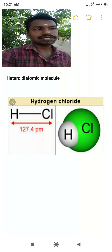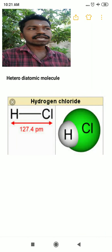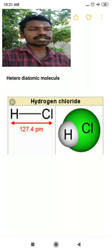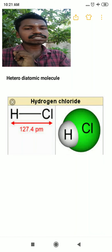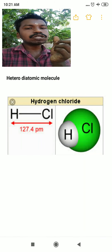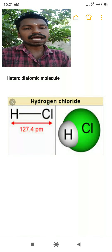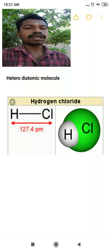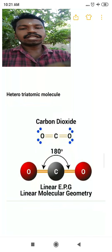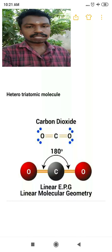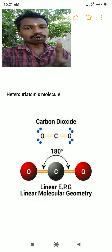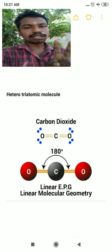Two more types: heterodiatomic and heterotriatomic. HCl is a heterodiatomic molecule — it has two atoms (one hydrogen and one chlorine), and since they are different atoms, it is heterodiatomic. CO₂ is a heterotriatomic molecule — it has three atoms (one carbon and two oxygen), made of two different kinds of atoms.